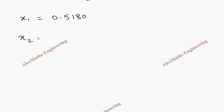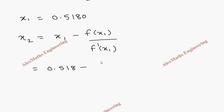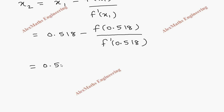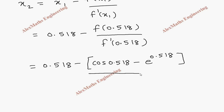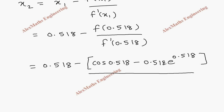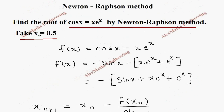Now using x1 = 0.518, we calculate x2. By the formula, x2 = x1 - f(x1) / f'(x1) = 0.518 - f(0.518) / f'(0.518). The numerator is cos(0.518) - 0.518·e^0.518.